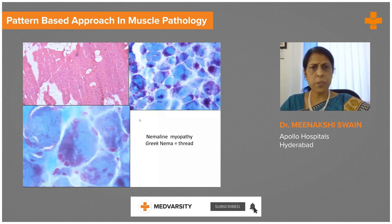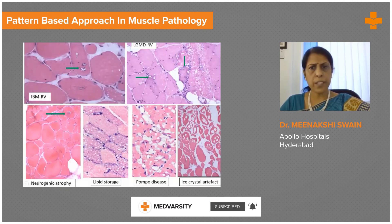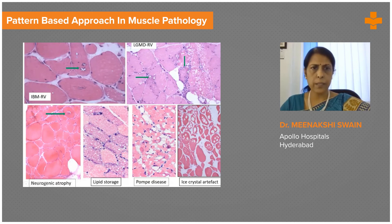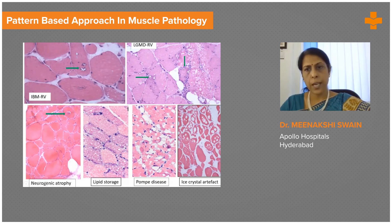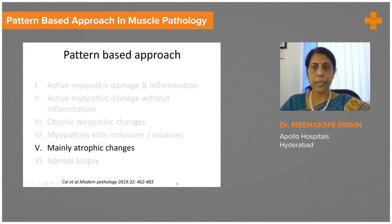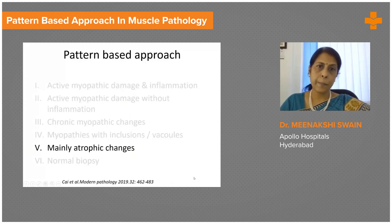This picture shows various types of vacuoles, which could range from inflammatory to dystrophies, to neurogenic atrophies, to storage disorders. The most common thing to keep in mind while looking at this group is a freeze artifact, which one needs to distinguish from true vacuoles in muscle disease.